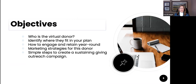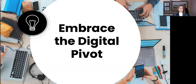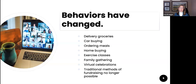As Jennifer mentioned, today's objectives are: who is this virtual donor, how do they fit in your plan, how do you engage and retain them year-round, marketing strategies for the donor. We're going to spend time thinking about how you're engaging them prior and after, then walking through simple steps to create a sustaining giving outreach program. Sustaining giving is somebody who's going to give more than just once a year — it could be an annual campaign or recurring giving. A lot has happened over this past year, and donors are embracing this digital pivot.